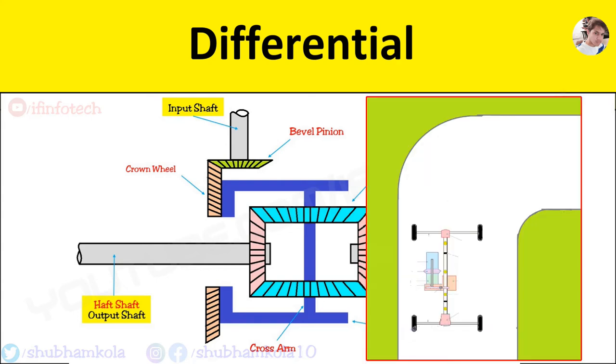Now you see the differential action. When the vehicle takes a turn on a curved surface, the inner wheel meets higher resistance than the outer wheel and hence its rotation is slowed down.